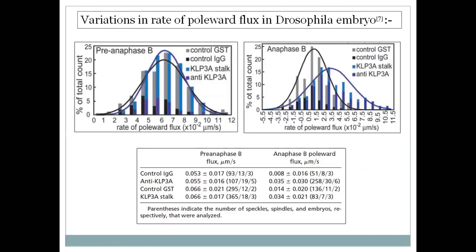These results are experimental. We have two datasets: pre-anaphase B and anaphase B. During pre-anaphase B, poleward flux sustains itself, and the presence or absence of KLP3A makes little difference — the rates of poleward flux are comparable across all four samples. So KLP3A plays no role during pre-anaphase B, when there is no spindle elongation. This is shown in the table, where all values are comparable.